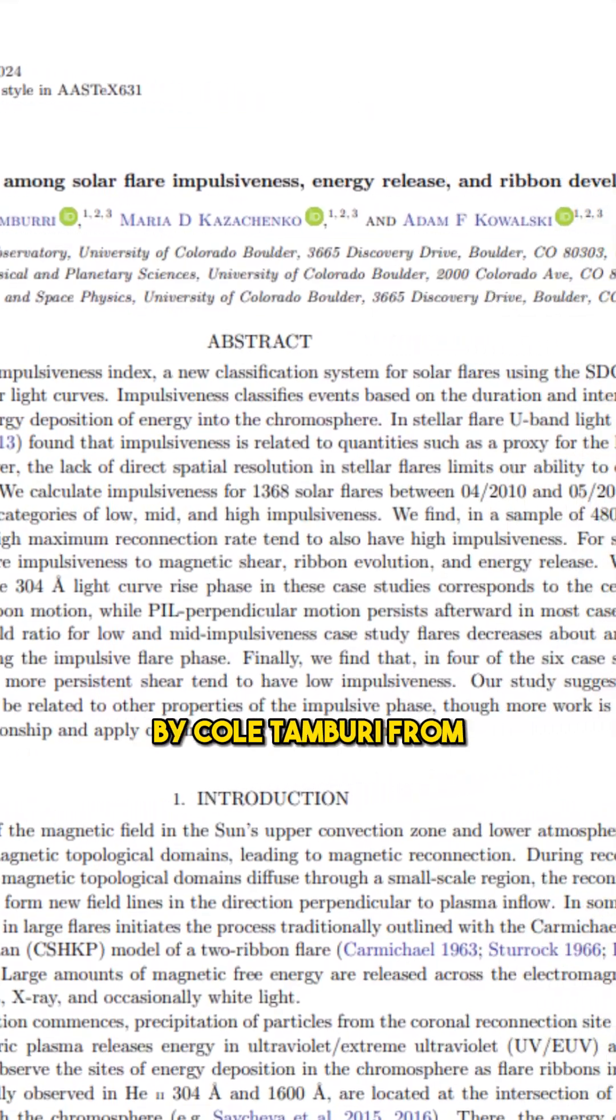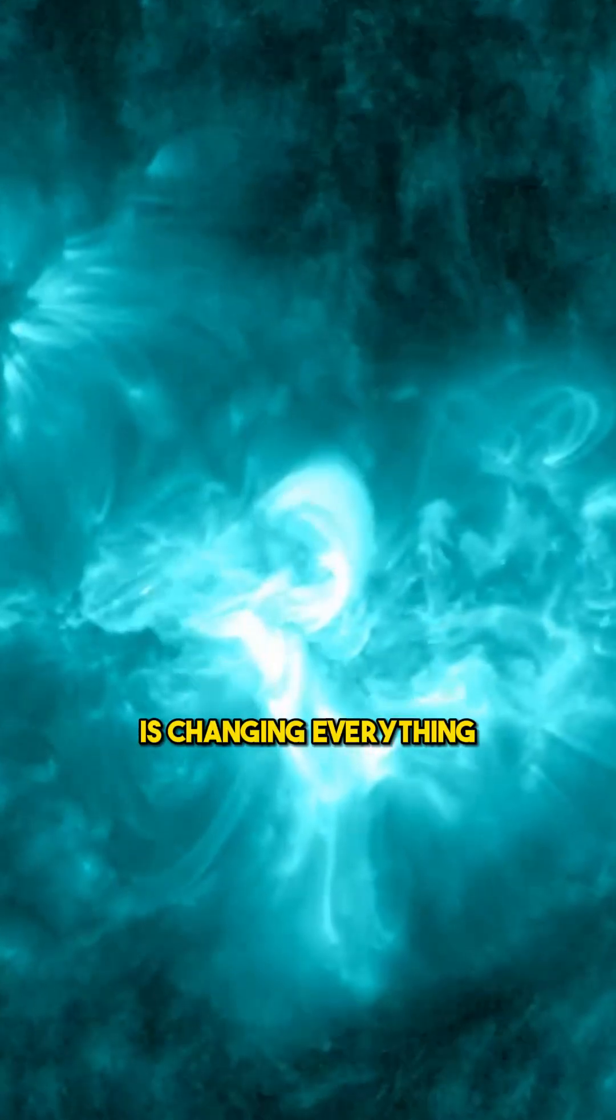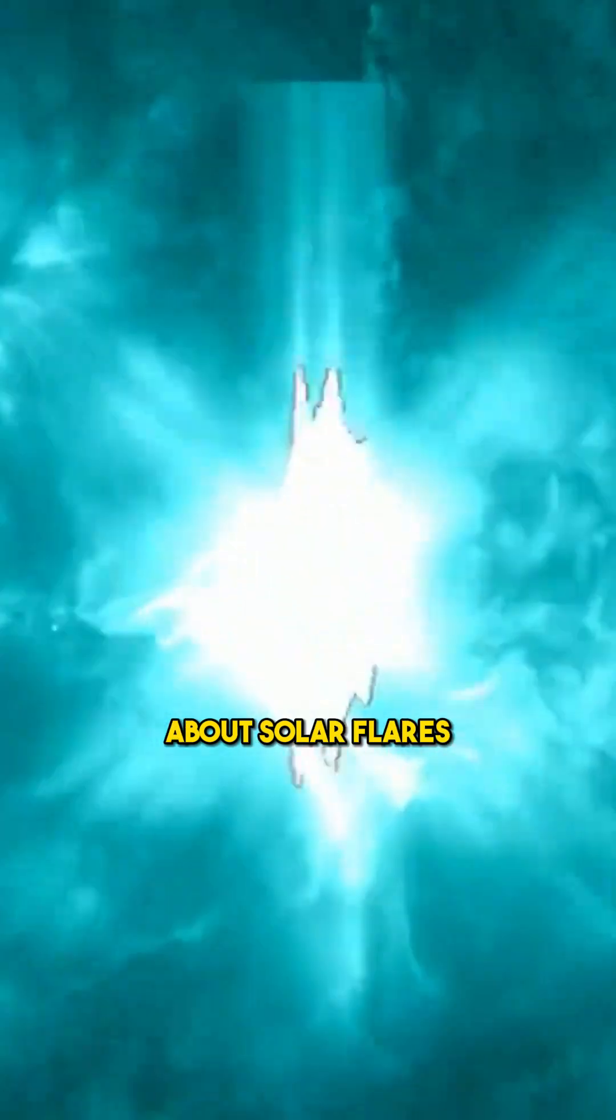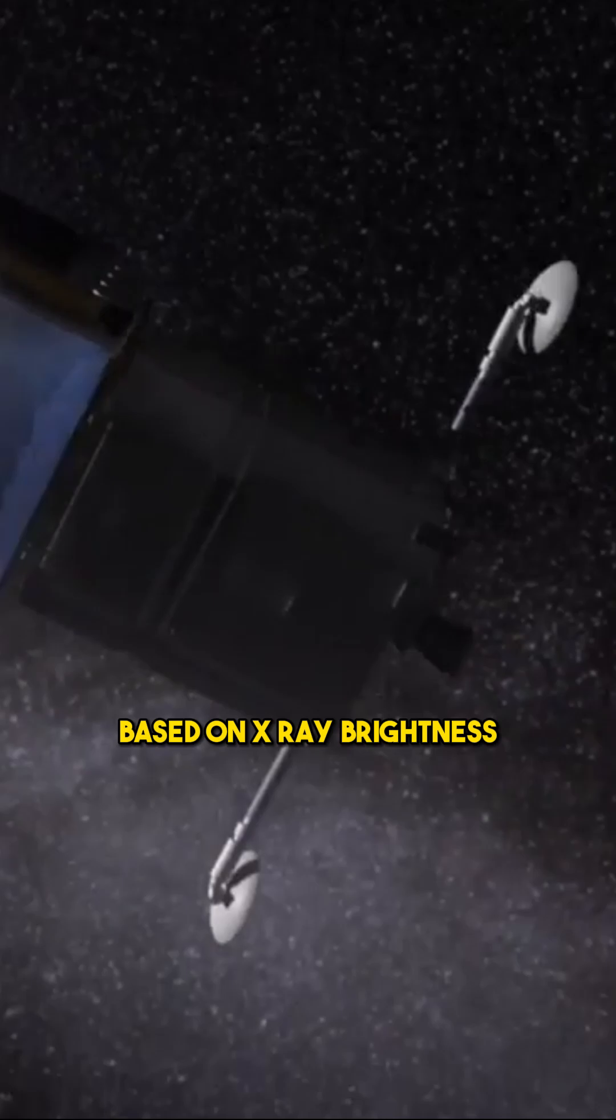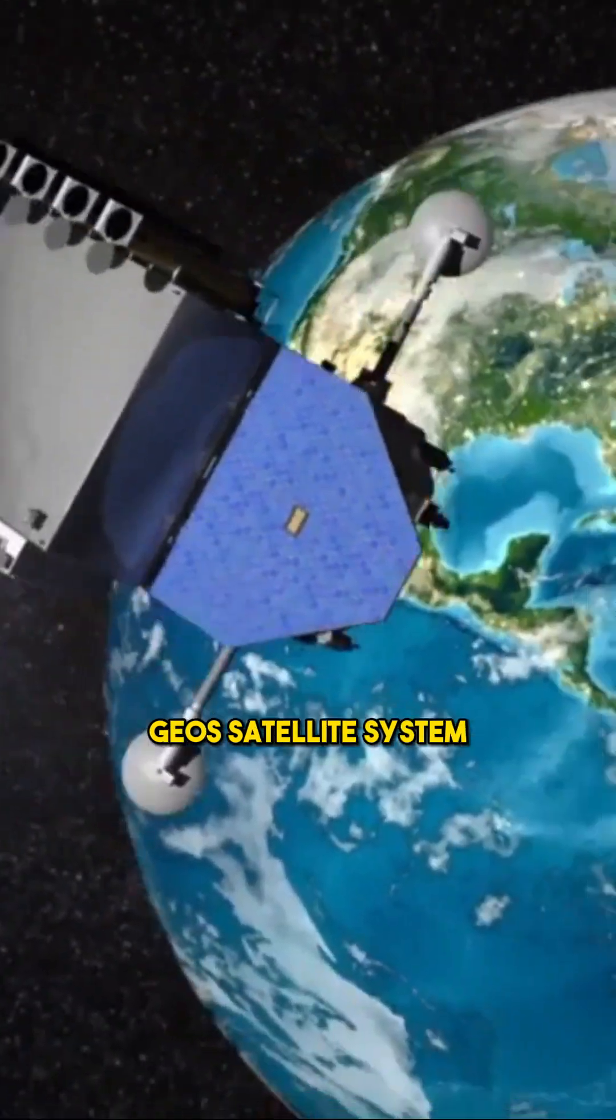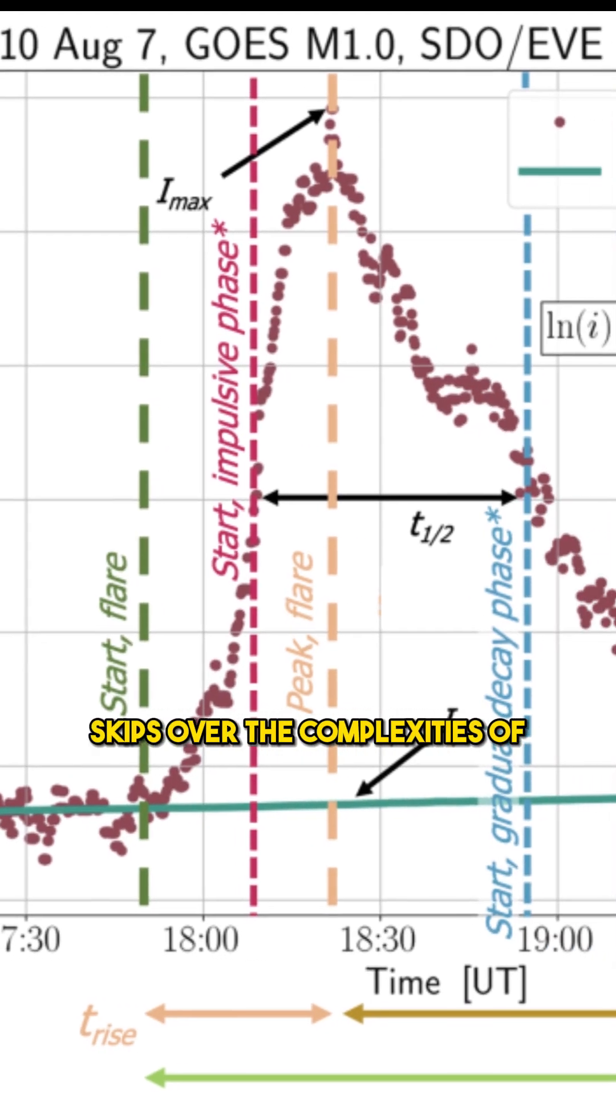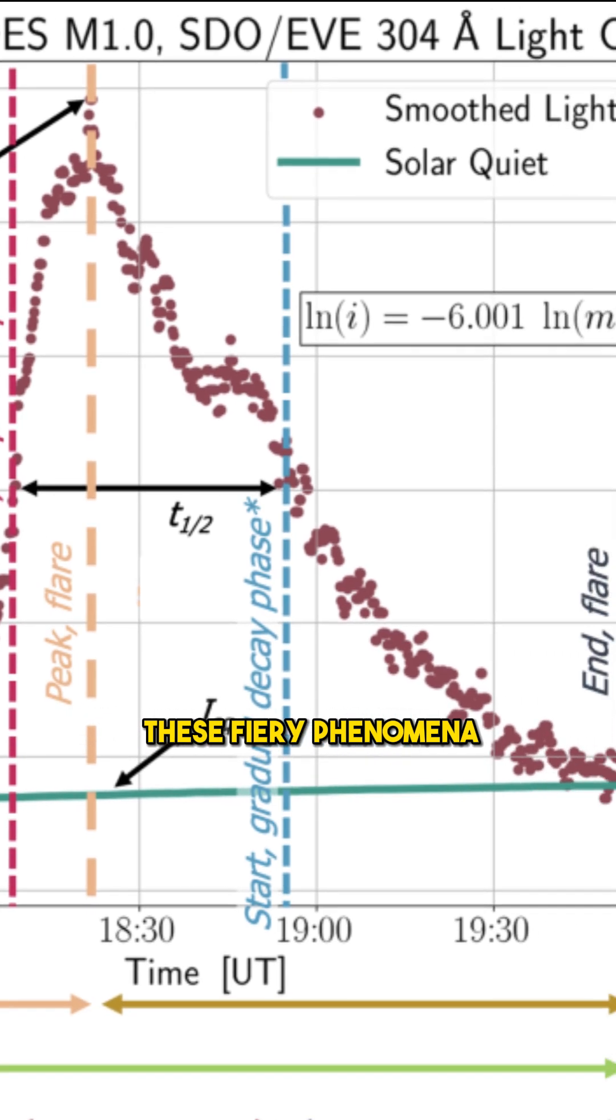Groundbreaking research by Cole Tamburi from CU Boulder is changing everything we thought we knew about solar flares. Typically, these flares are rated from A to X based on X-ray brightness observed by the GOES satellite system. But this method skips over the complexities of these fiery phenomena.